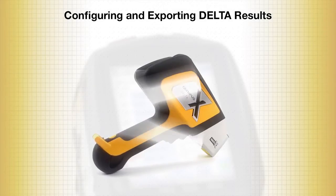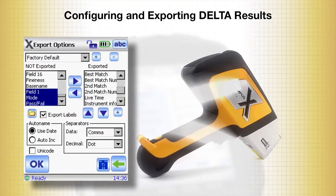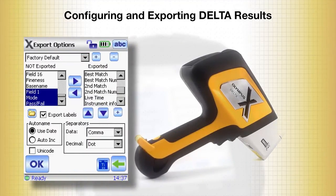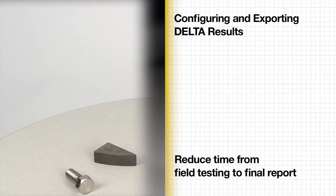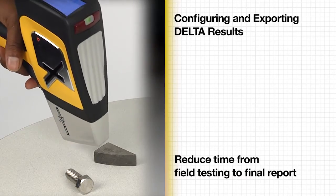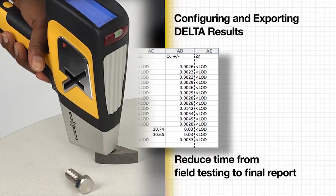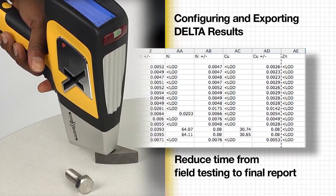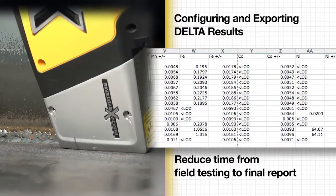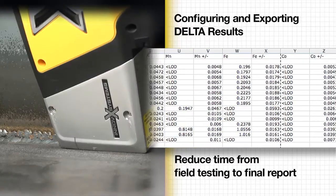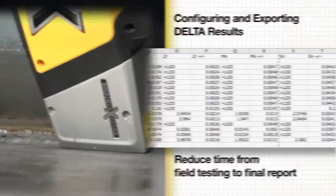This video will show you how easy it is to export test results from the Olympus Delta handheld XRF analyzer and how to reduce the time required to go from field testing to the final report. The results report, generated by the Delta, whether in digital or hardcopy form, is often the most important outcome of field testing.